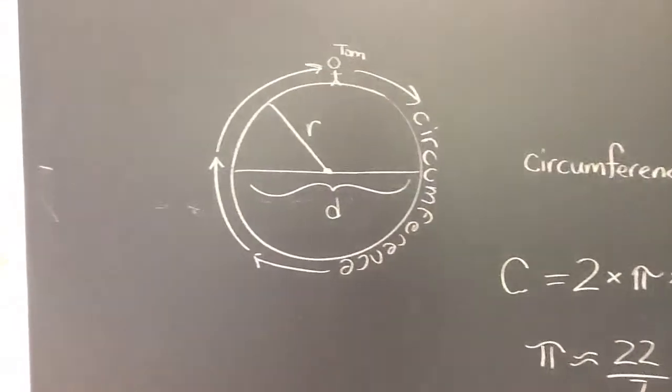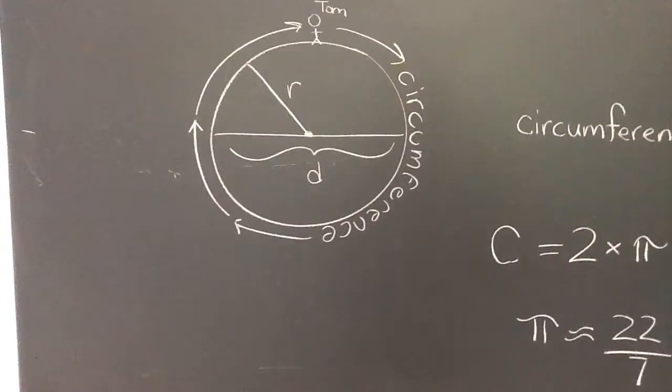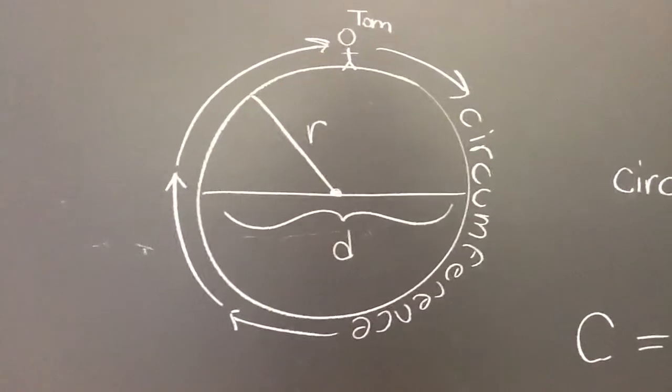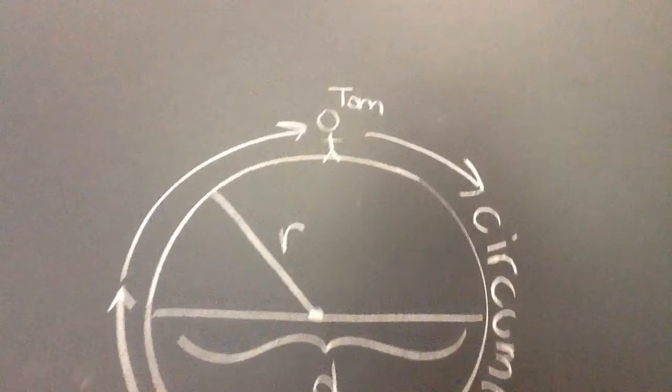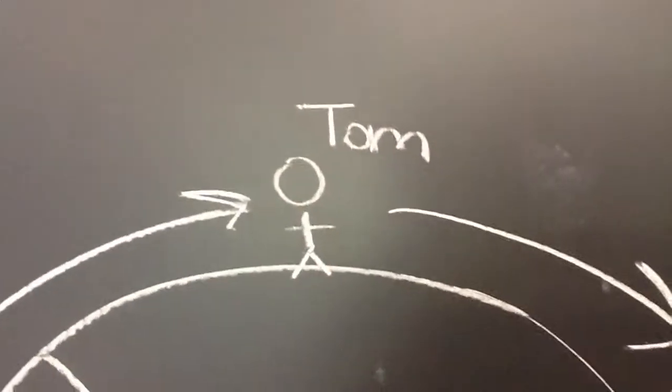Let's talk about circumference of a circle. So here is something like a little planetoid, and here's Tom at the surface of the planetoid.